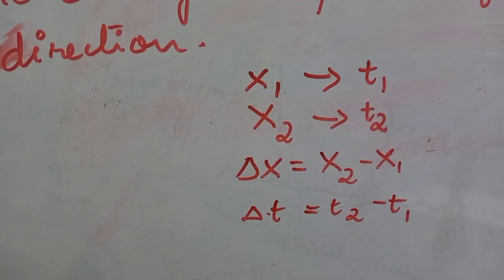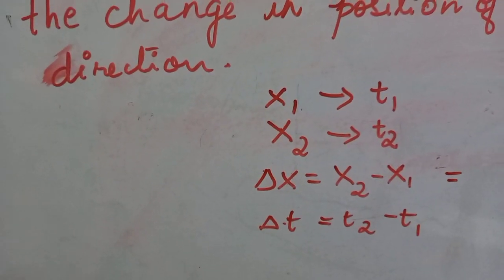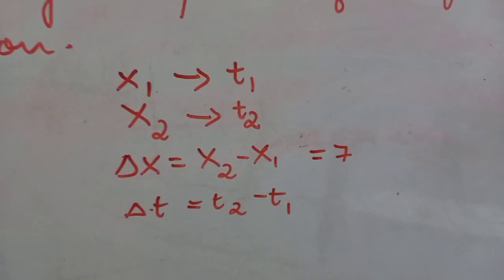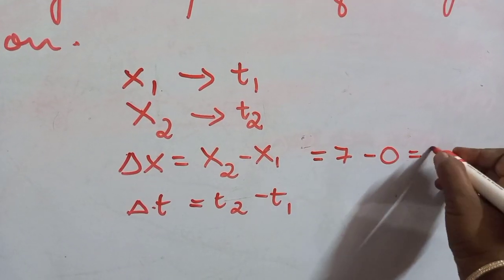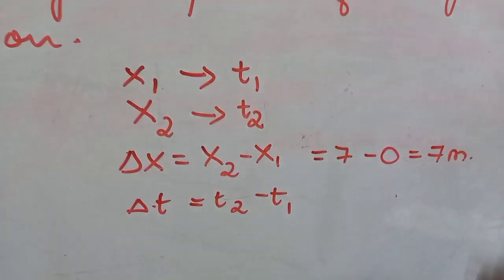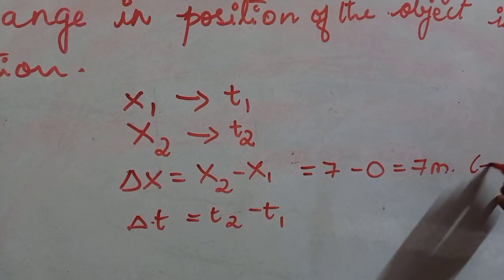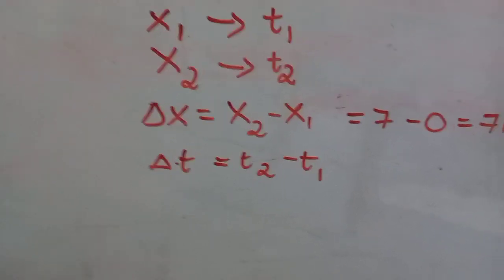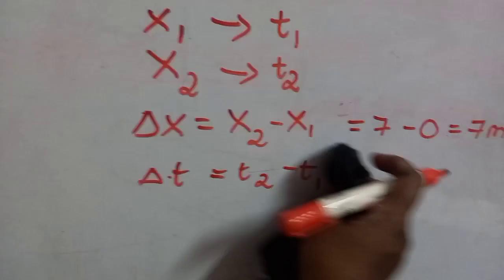For example, taking x₂ = 7 (position of P) and x₁ = 0, displacement = 7 meters along the positive x-axis.